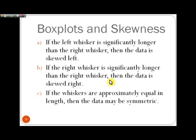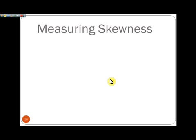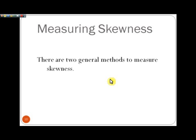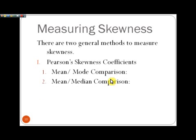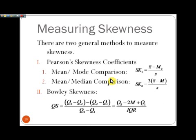The data may be symmetric if the whiskers are approximately equal, but some of that depends on the relationship between the median and the first and third quartiles. We can also quantify skewness and give it a number. There are several ways to do that — first, Pearson's skewness coefficients, which compare the mean and the mode, or the mean and the median. Then there's Bowley skewness, which compares the quartiles.